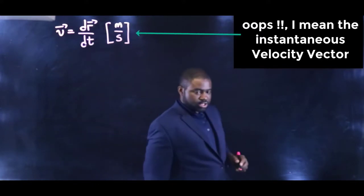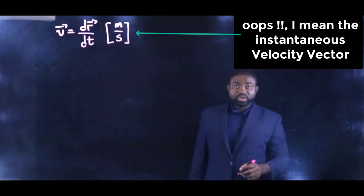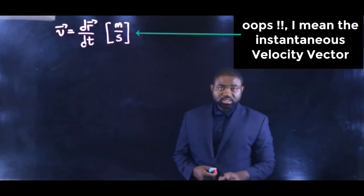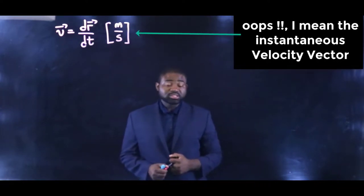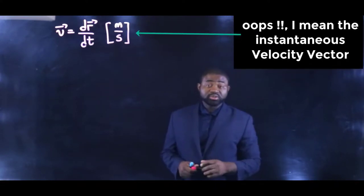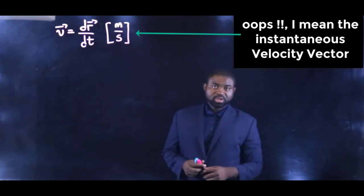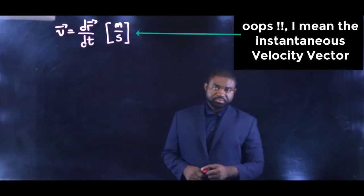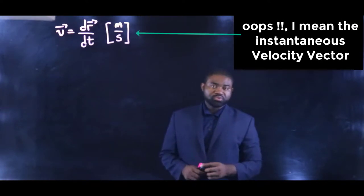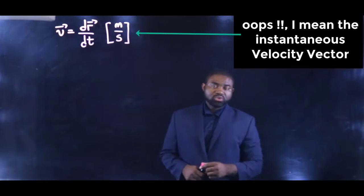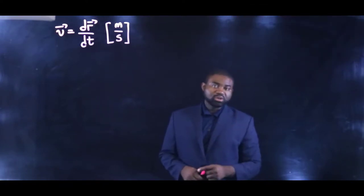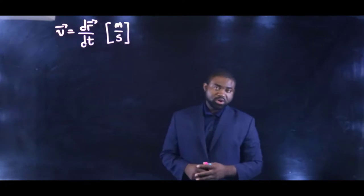Just so you should be aware, the instantaneous velocity vector is a vector, which means that it has both a magnitude and a direction. Think about this scenario: you are sitting in a car on a beautiful day and you're driving along the road with a speed limit of about 70 miles per hour.